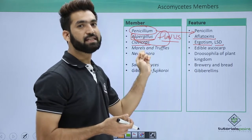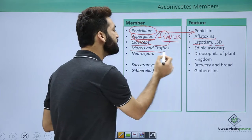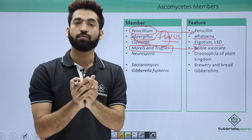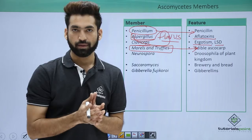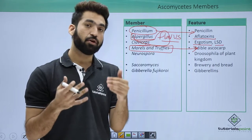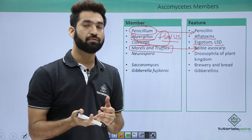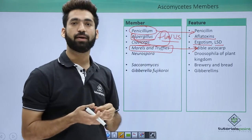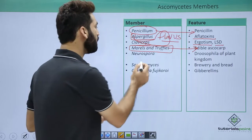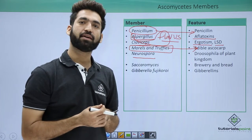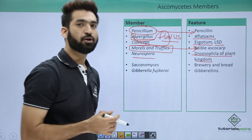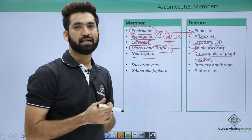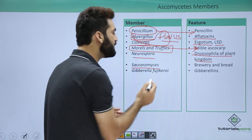Morels and truffles are edible Ascomycetes — we eat their fruiting bodies. Remember: mushrooms are eaten and belong to Basidiomycetes, but if asked which Ascomycetes members are eaten, the answer is morels and truffles. Neurospora crassa is called the Drosophila of the plant kingdom; it is also called pink mold. An important experiment was done based on Neurospora, which will be covered in the next sessions.